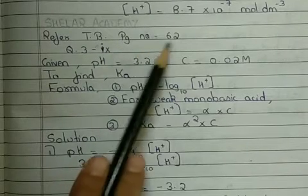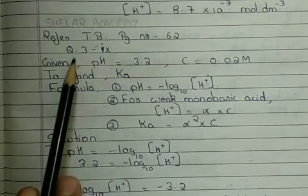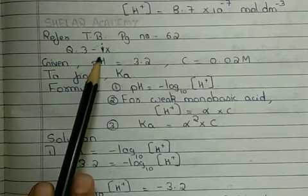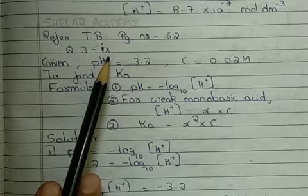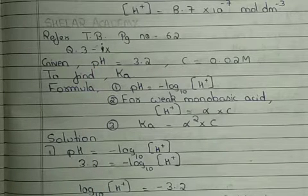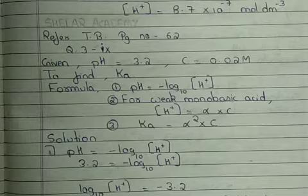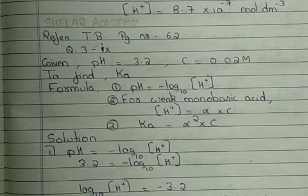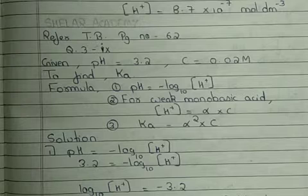Friends, from our textbook page number 62, question number 3, sub question 9. The question says pH of weak monobasic acid is 3.2 in its 0.02 molar solution, calculate its dissociation constant.